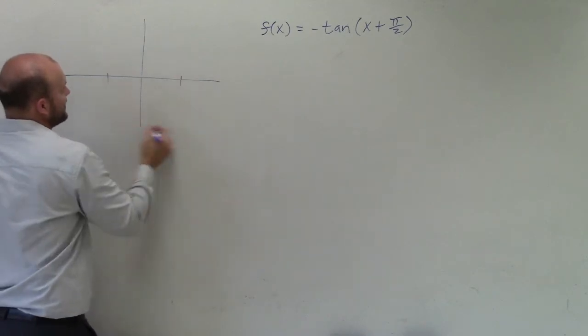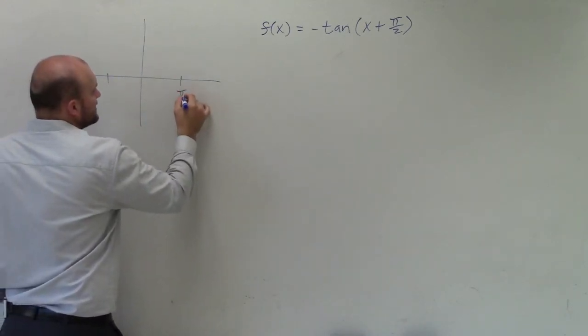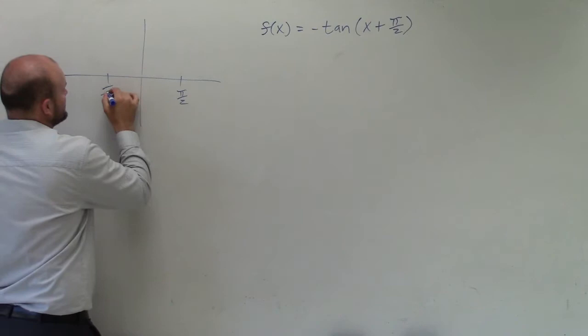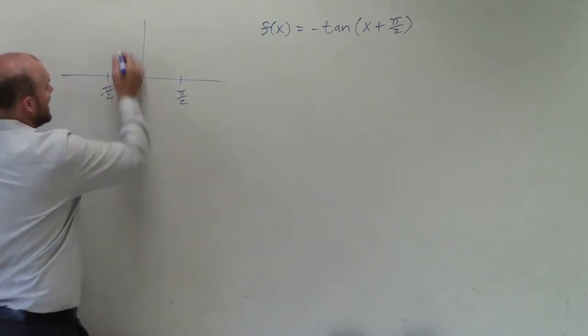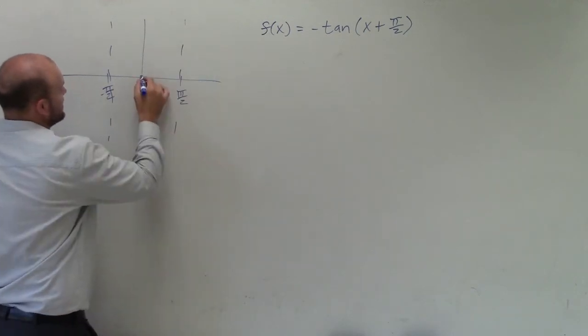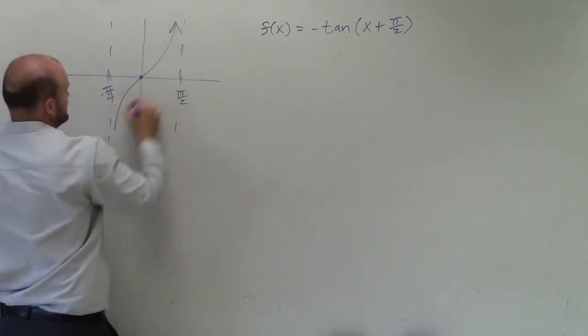So the parent graph has a period of pi and has two asymptotes at negative pi halves and pi halves. Something like this. And then the graph falls to the left and rises to the right.